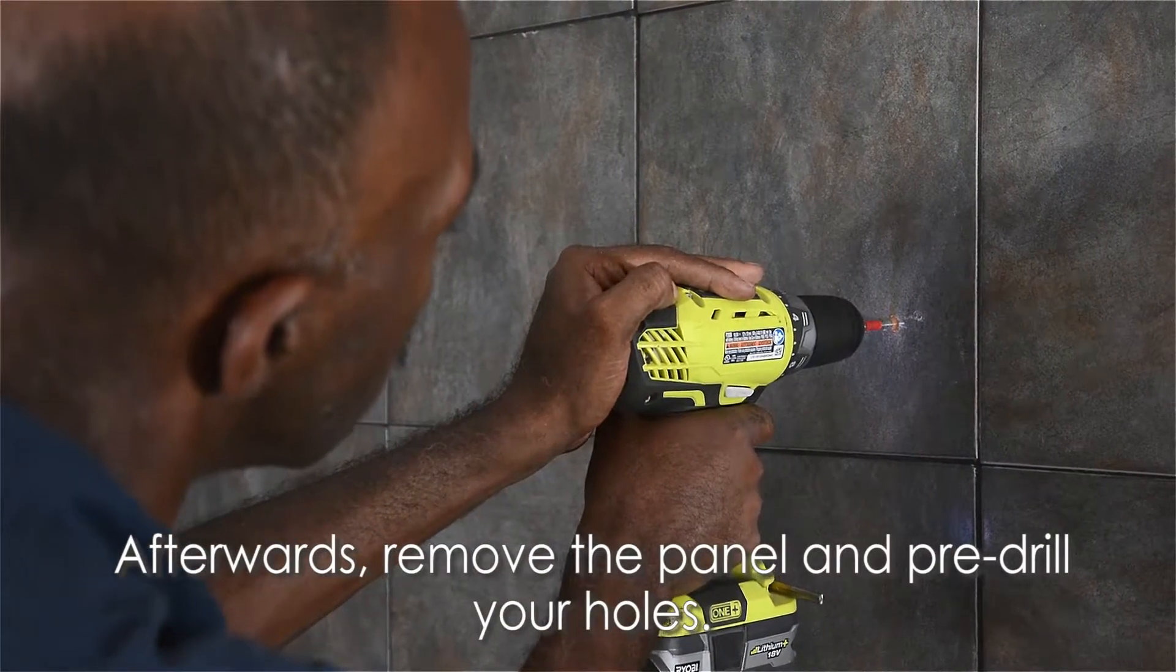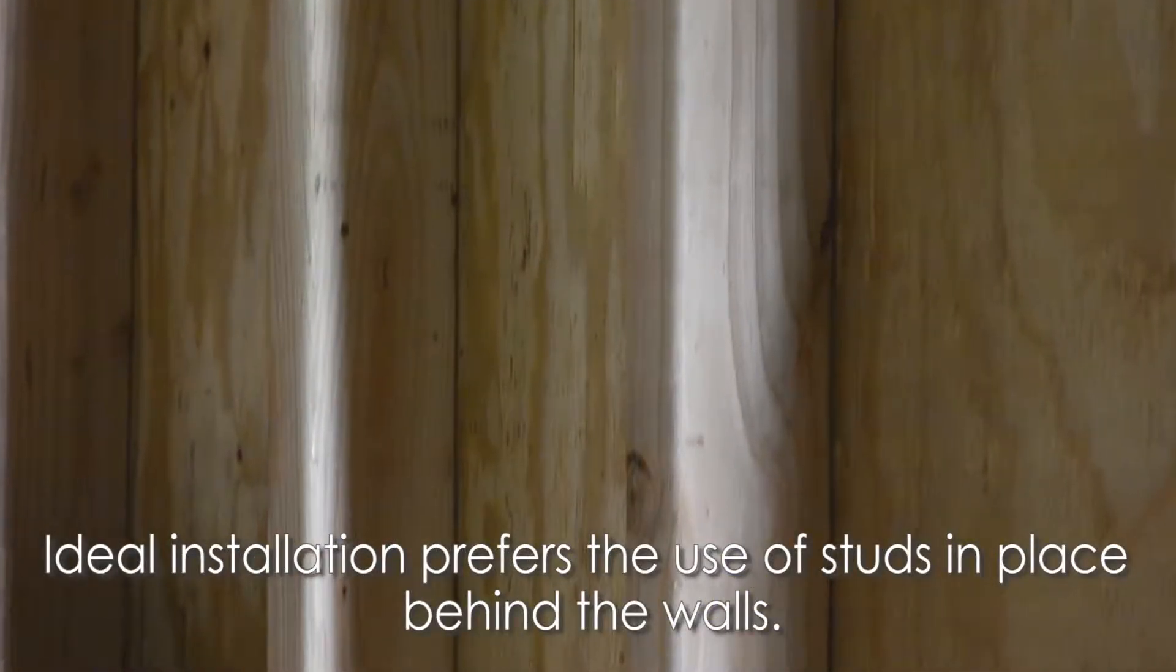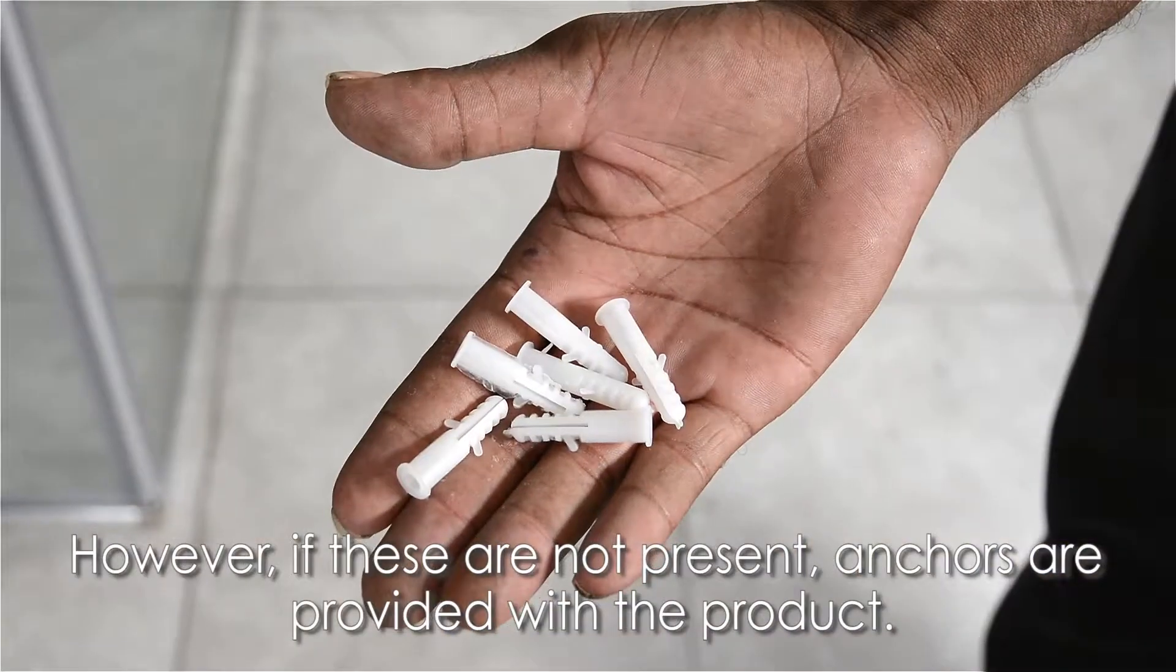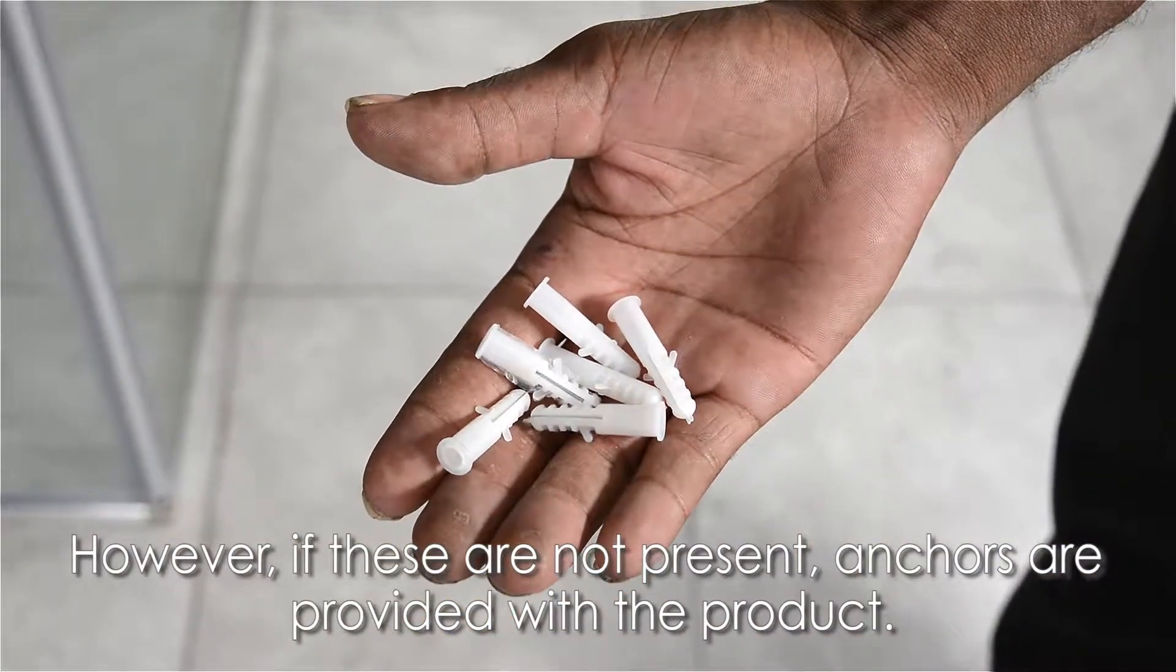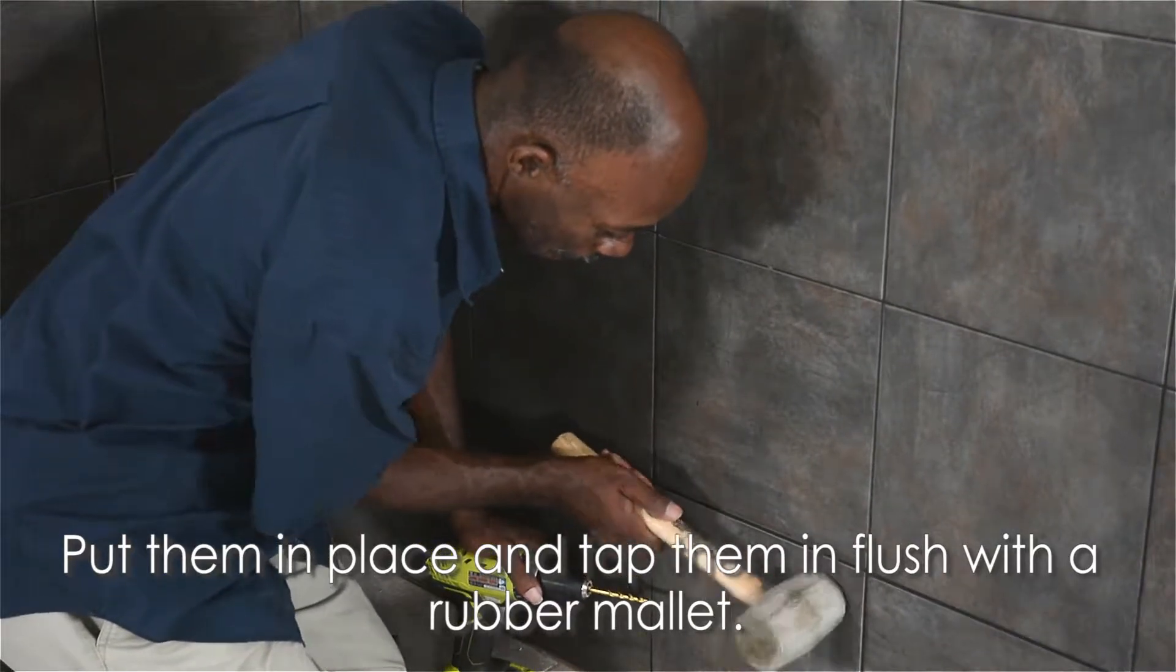Afterwards, remove the panel and pre-drill your holes. Ideal installation prefers the use of studs in place behind the walls. However, if these are not present, anchors are provided with the product. Put them in place and then tap them in flush with a rubber mallet.